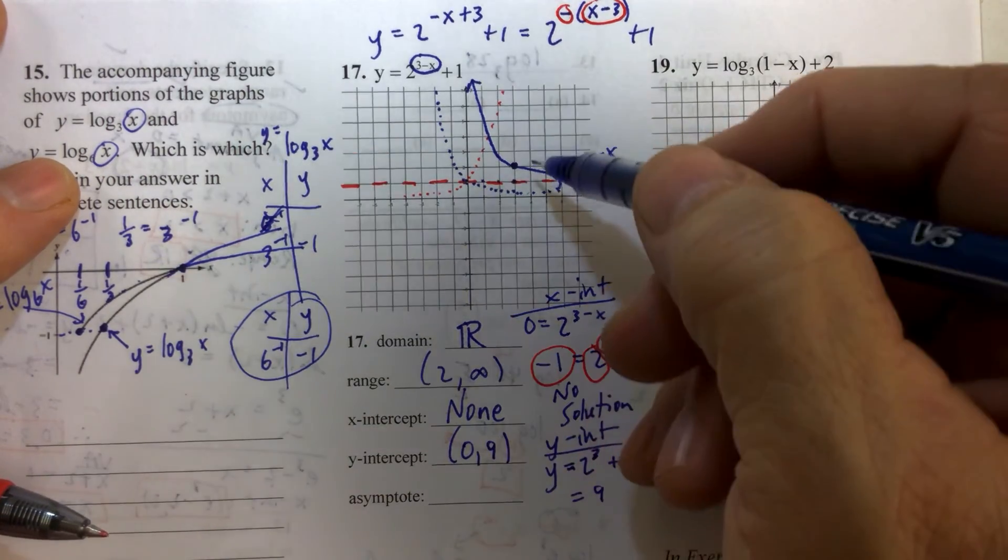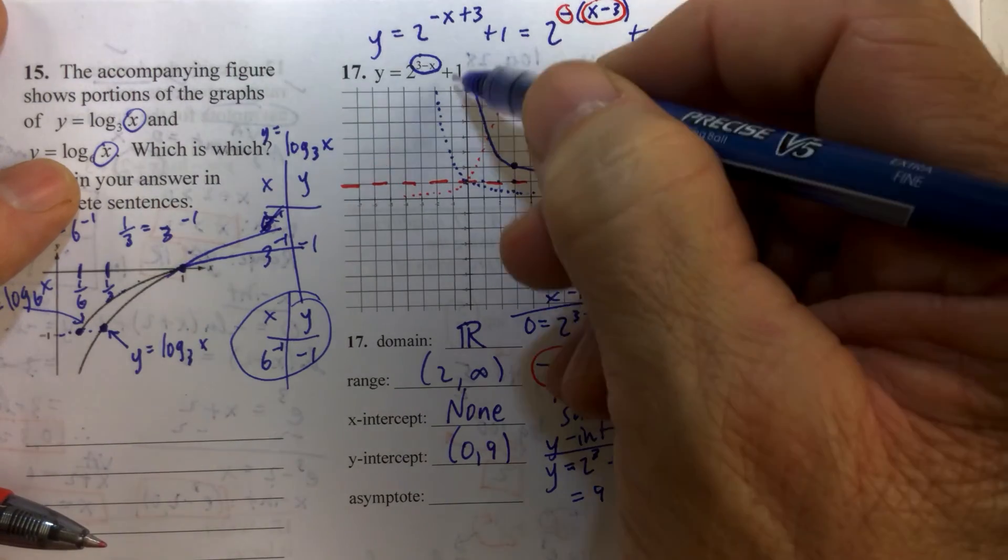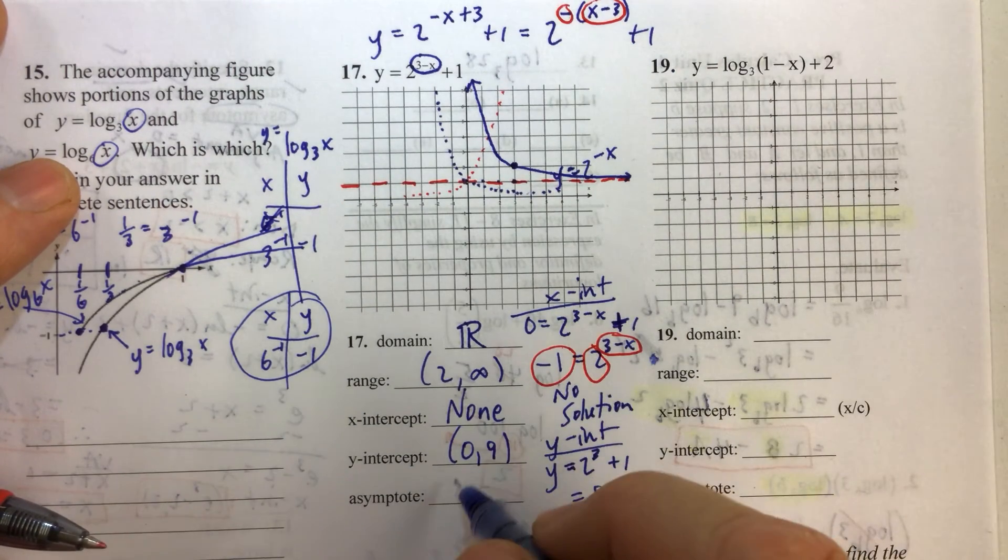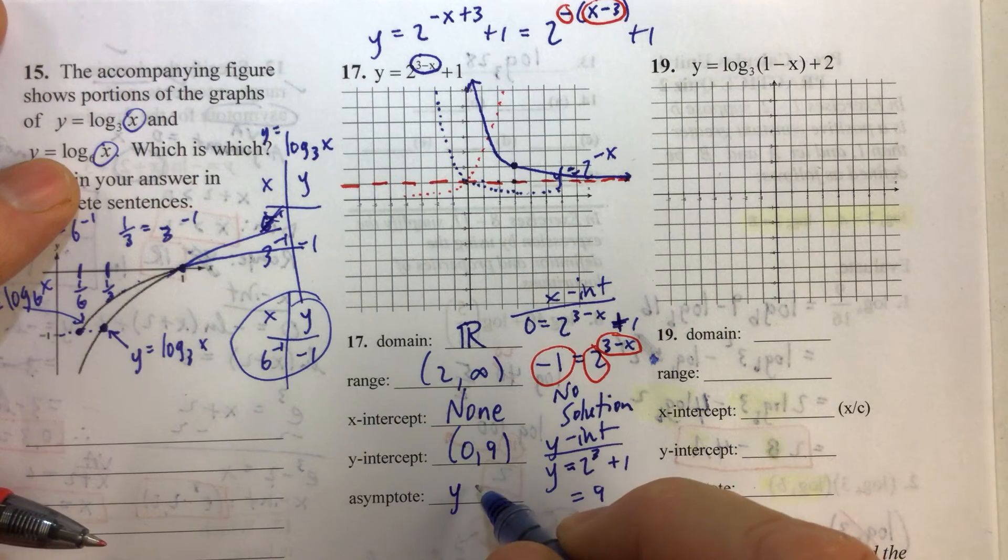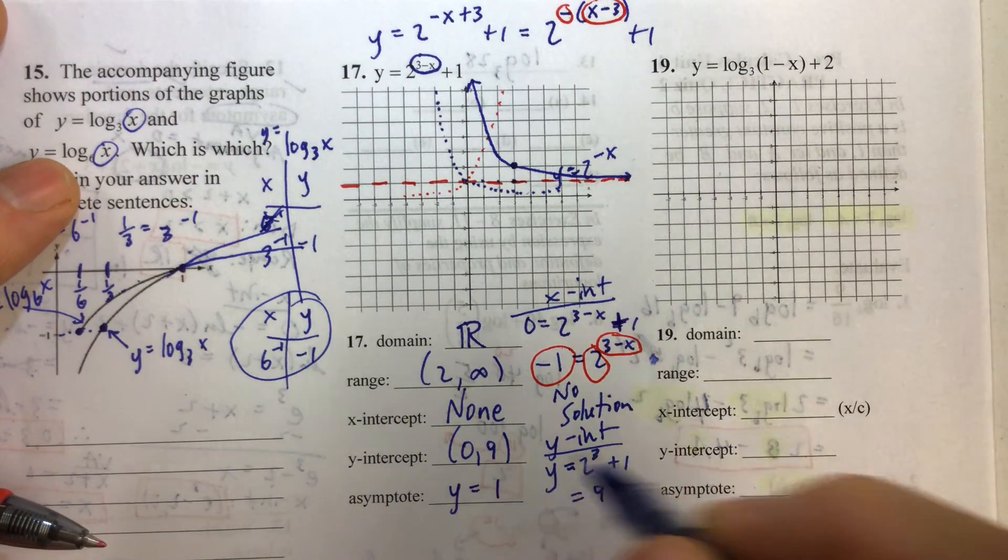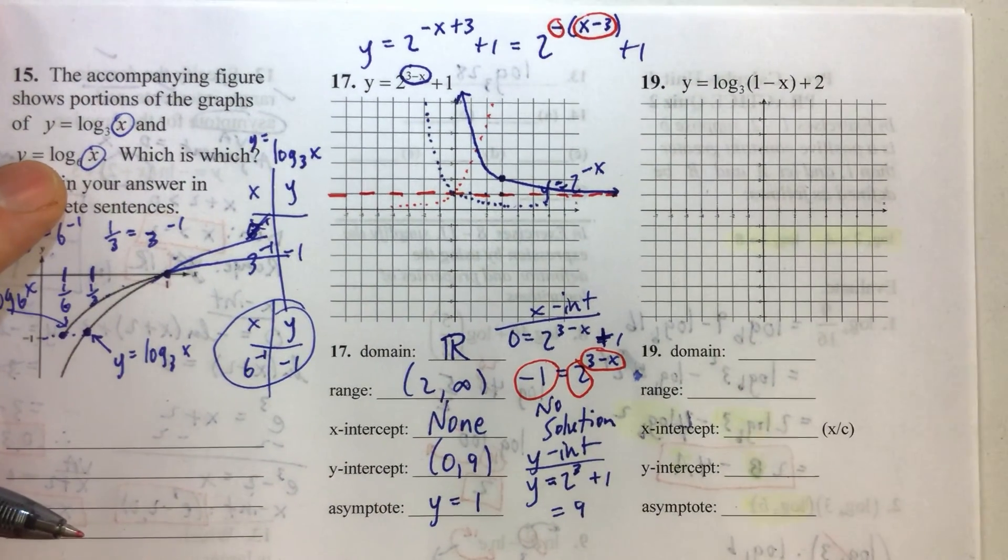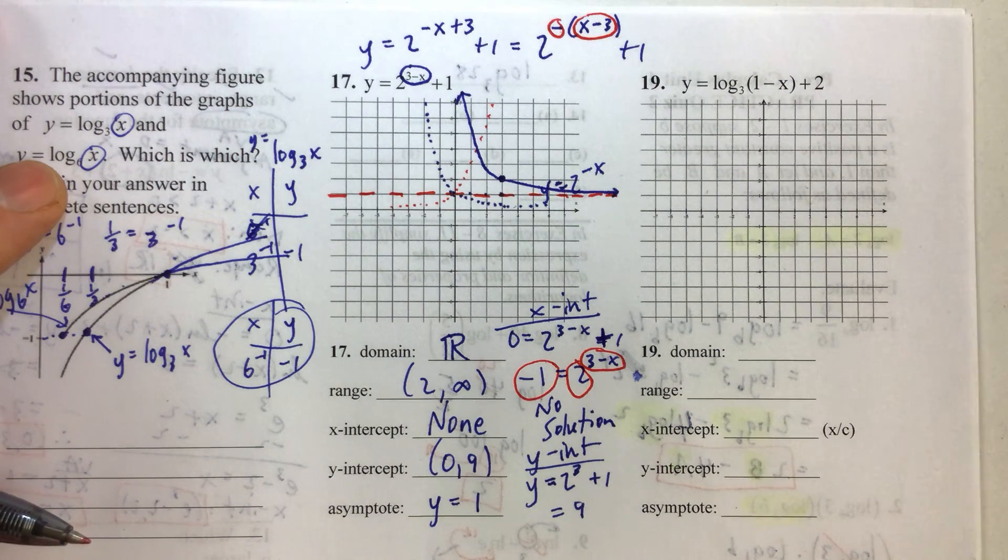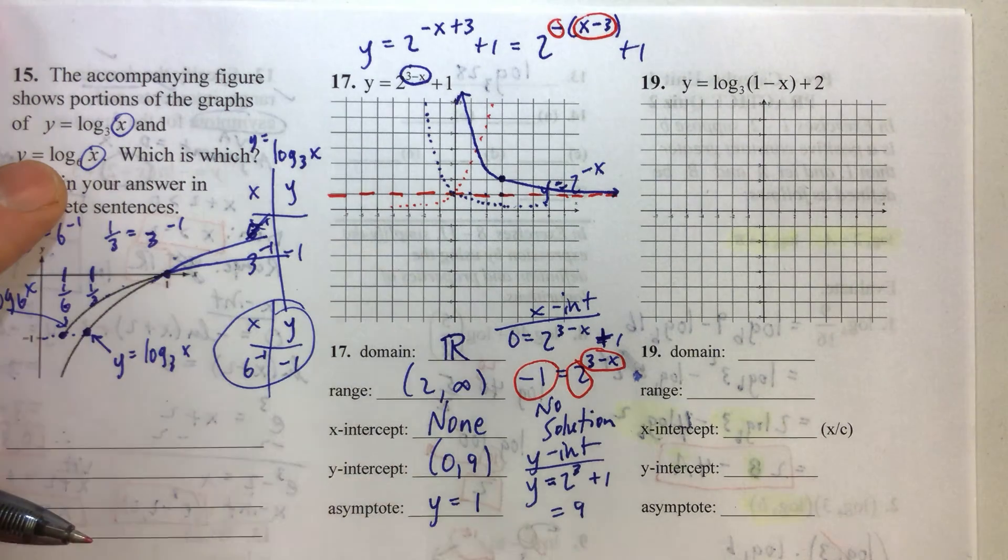And then our asymptote: we don't have to do any work for that. We already know what it is. It's y equals 1. Always make sure you list your asymptotes as equations.